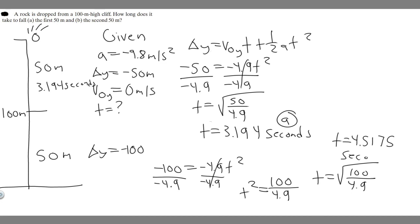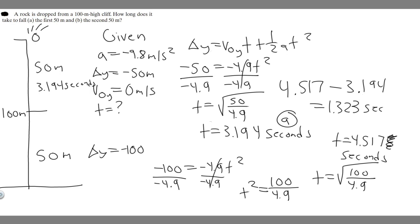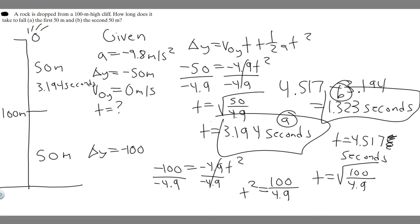So we know it takes 4.5175 seconds for the whole fall and 3.194 seconds for the first 50 meters. Subtracting, 4.5175 minus 3.194 equals approximately 1.323 seconds. That's the time it takes to fall the second 50 meters — your answer for part (b). Hopefully you found this video useful.